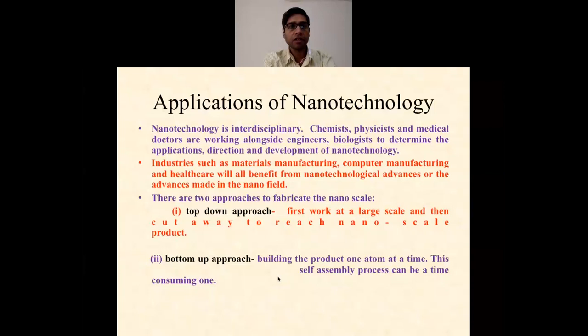Basically, there are two approaches to fabricate nanoscale systems. First one is the top-down approach, in which you first work at a large scale and then cut away to reach nanoscale systems. Top-down means first you see the bulk and you cut away the system to reach a smaller or nanoscale. Bottom-up approach: building the product one atom at a time. This self-assembly process can be time consuming, meaning in this you have to combine atom by atom to make the nanomaterial.